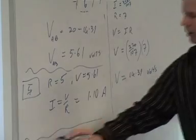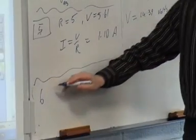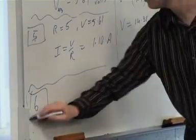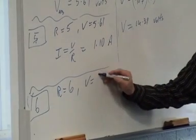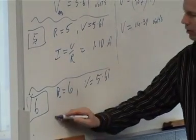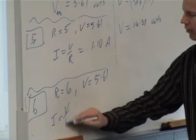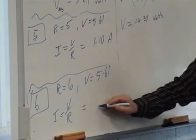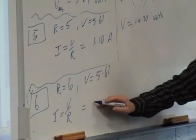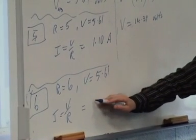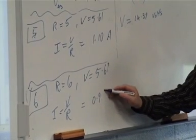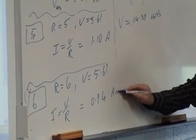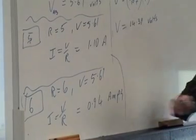And then I want to look at the other guy. My R equals 6, the V is still 5.61, the I is equal to V divided by R, is equal to 5.61 divided by 6, is going to be 0.9, 0.935 which is 0.94 amps.